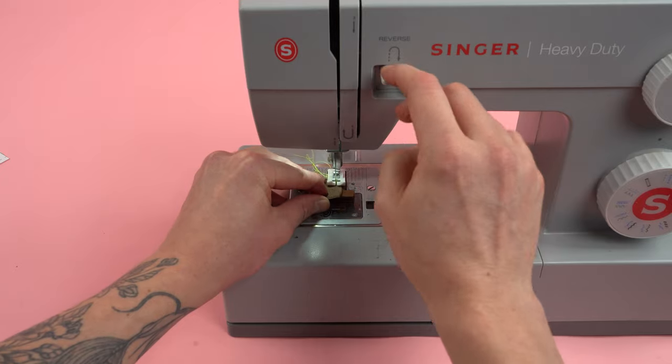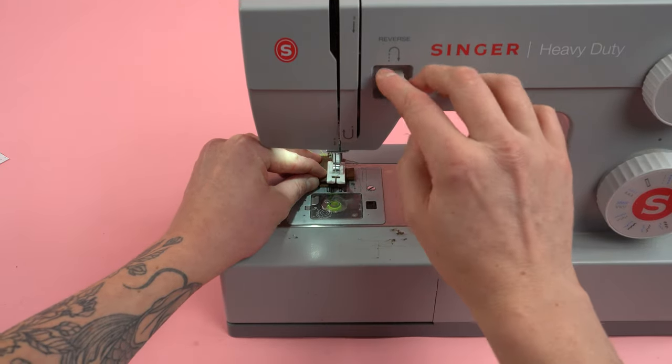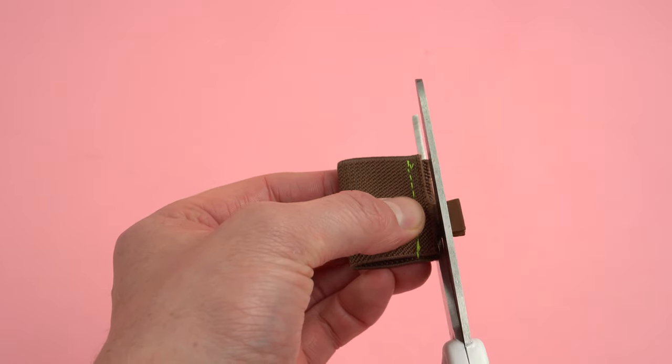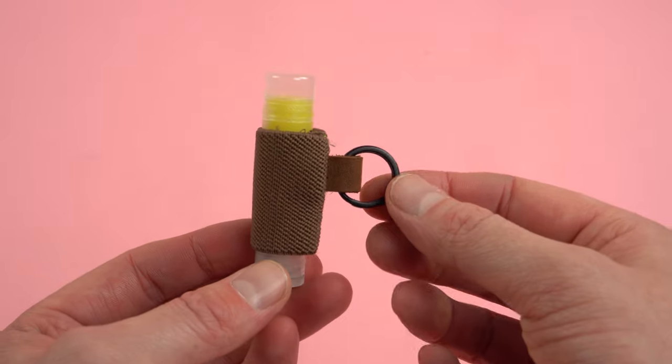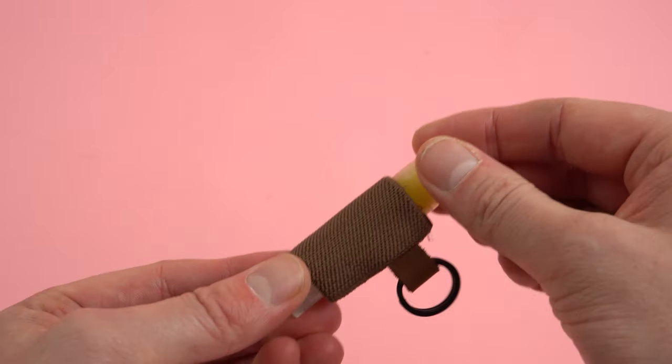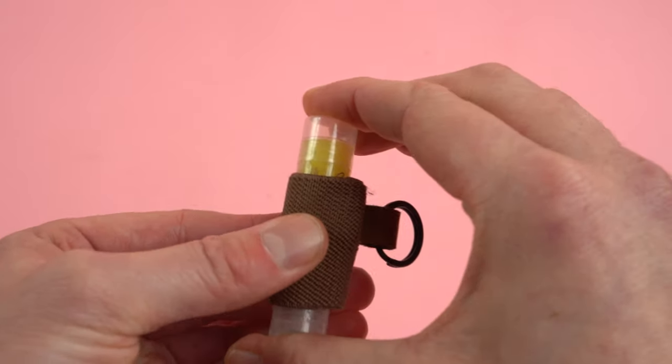When you're satisfied with the placement, stitch it on a quarter inch seam allowance, tacking heavily at the start and the end. Heavy tacking is really key here. Go ahead and trim your key ring material, clean up the edge, and flip it right side out. And that's gonna complete your chapstick holder. It's a super simple project but it's really useful and fun to make. Just another quick thing to throw on your lanyard.